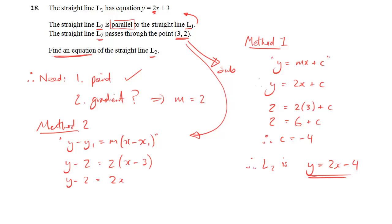So y minus 2, if we expand the brackets, is 2x minus 6. I'm simply going to add 2 to both sides, so I'm left with y as the subject. y is equal to 2x minus 4. Thankfully, we get the same answer.